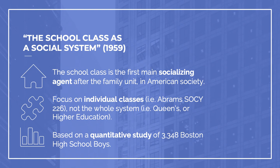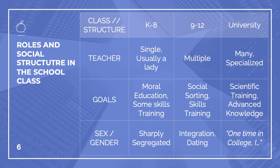Parsons draws all of his conclusions based on a data set of Boston high school boys — remember, he's at Harvard. Both his medical sociology and his educational sociology draw from his time and place there. Let's look at how social roles change and develop over time in the school class. I've drawn up a chart showing the changes in the social role at work in the classroom in 1959 and the ways that Parsons theorizes them. I've selected the teacher role, the goals of the educational enterprise, and notes on sex and gender. The teacher's role shifts from a primary caregiver in the elementary school system to one that becomes more and more varied. Then, the teacher was almost always a woman and was the first universal category children would encounter. As we progress through to tertiary education, the teacher becomes one in a sea of many — no longer just a caregiver, but more specialized.